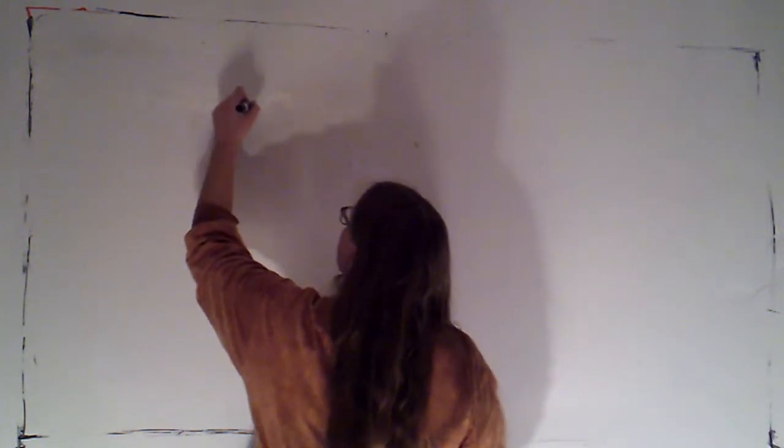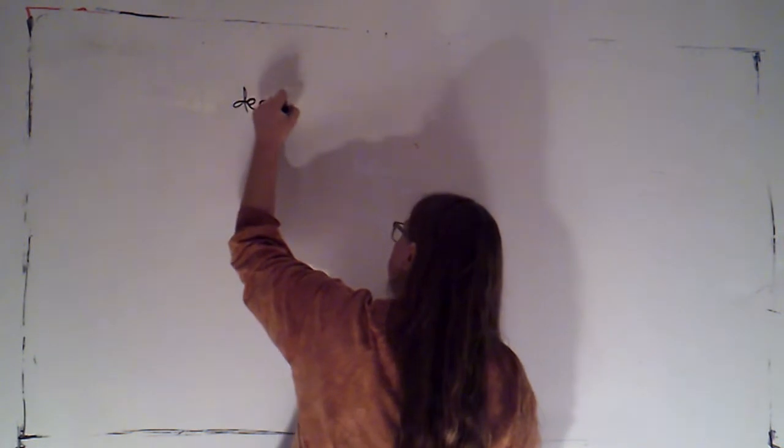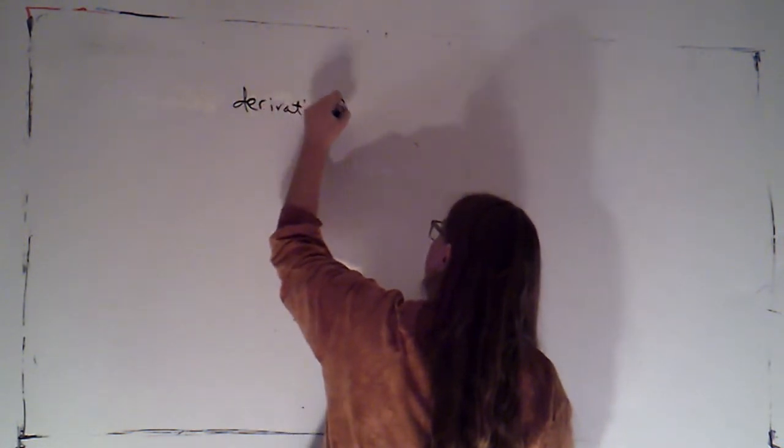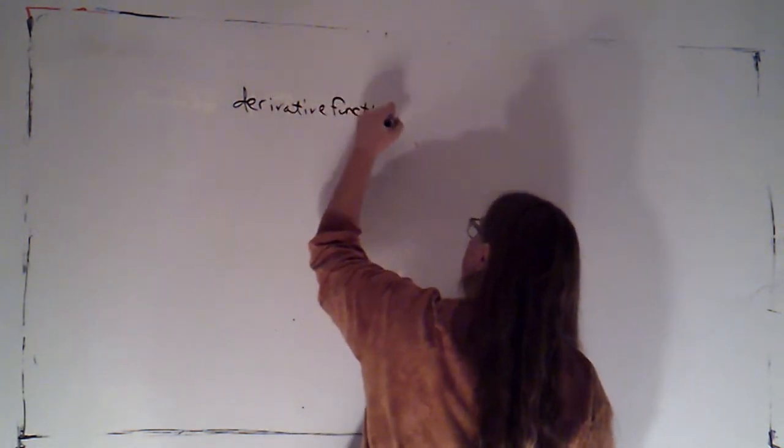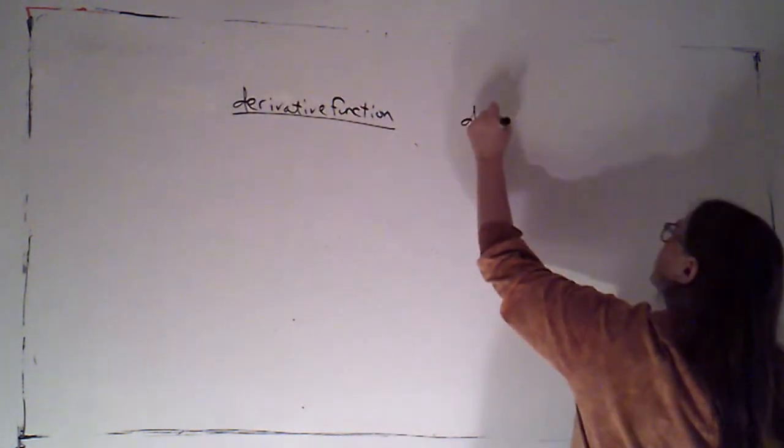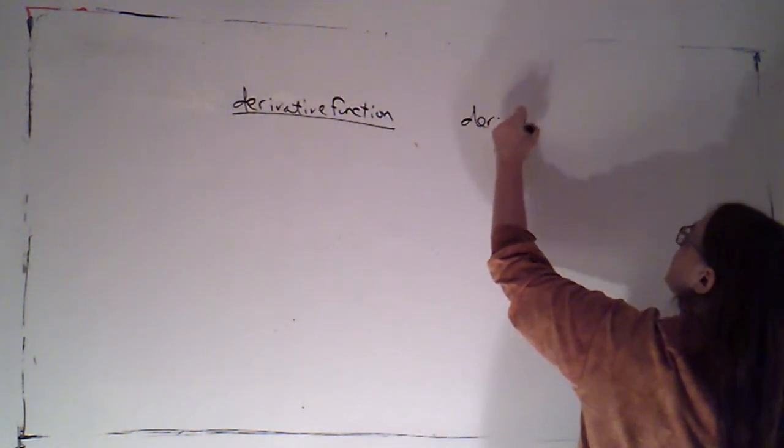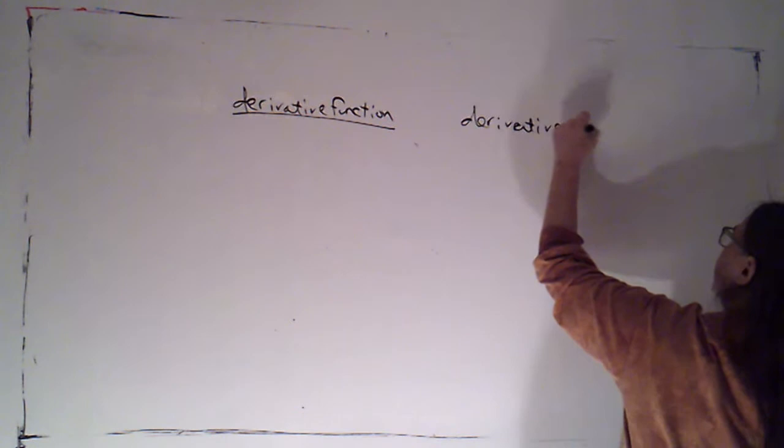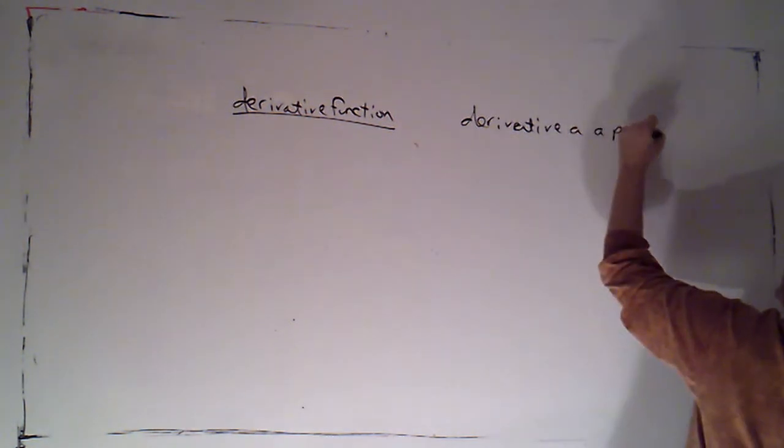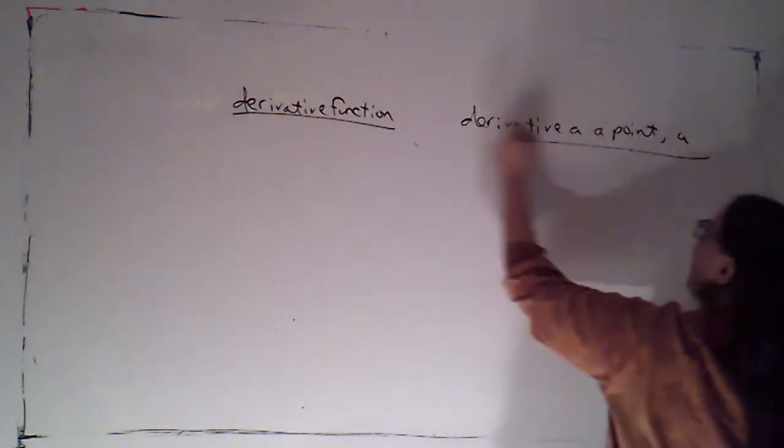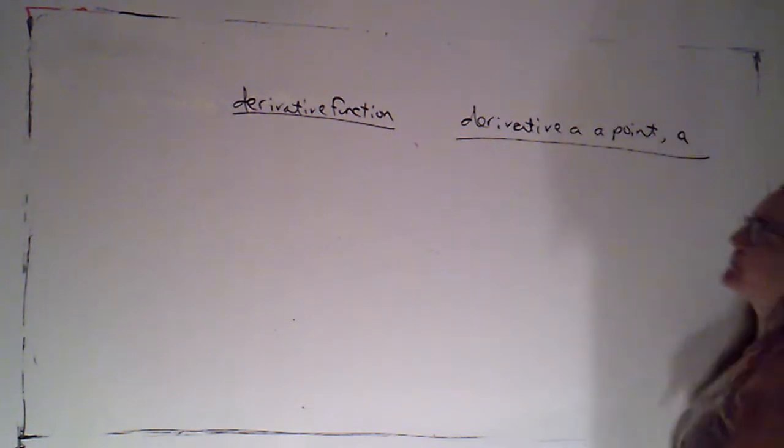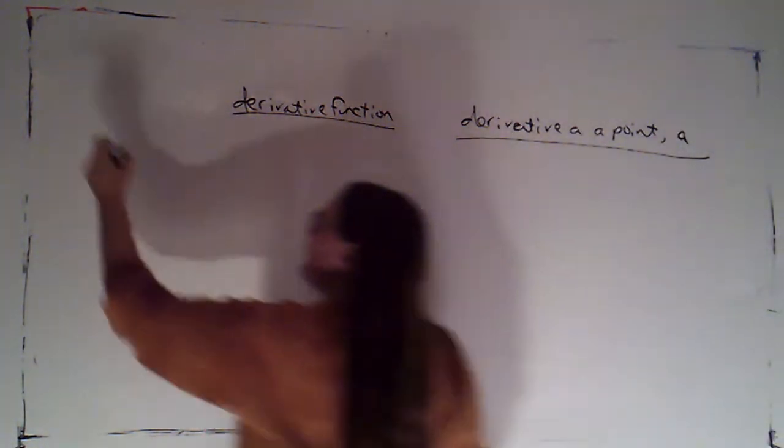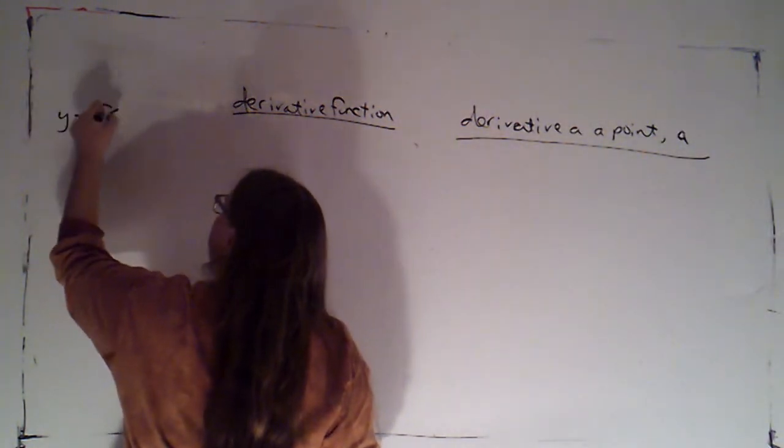So I'm going to go over all the different types of notation that we have for both the derivative function and the derivative at a point. And that'll be a point whose x value is a. So if I've got a function y equals f of x,